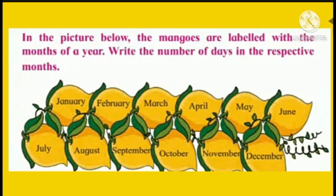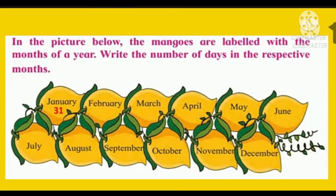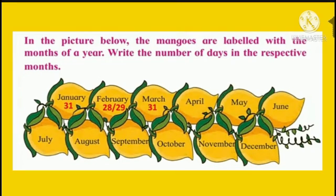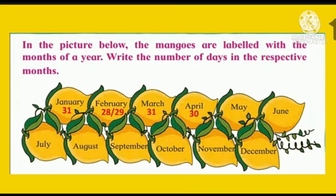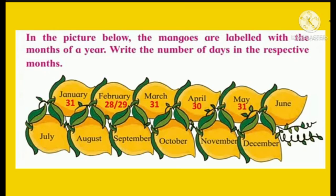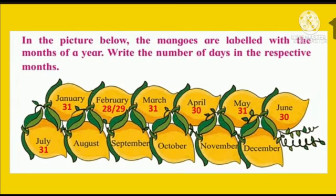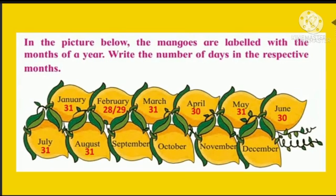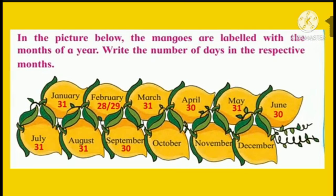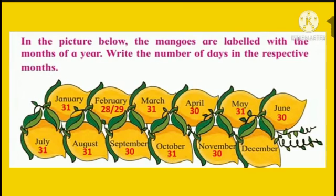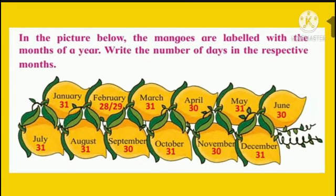Now children, all months have different numbers of days. January has 31 days. February has 28 or 29 days. March has 31 days. April has 30 days. May has 31 days. June has 30 days. July has 31 days. August has 31 days. September has 30 days. October has 31 days. November has 30 days. And December has 31 days.